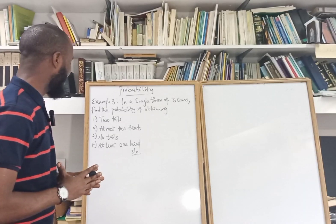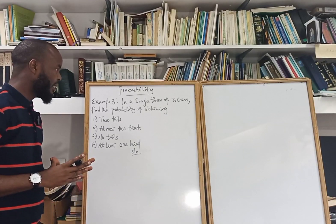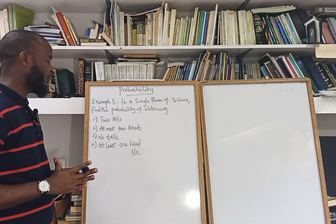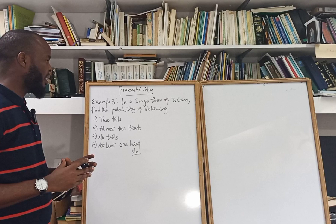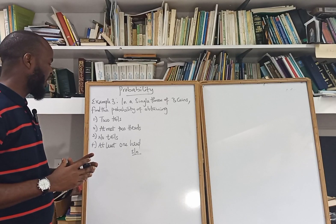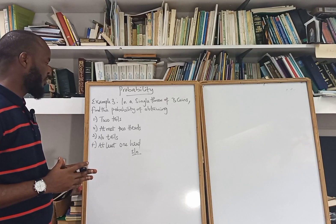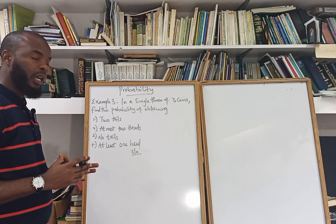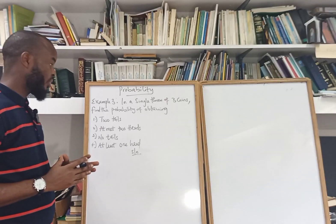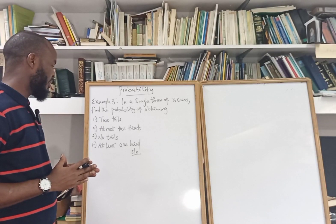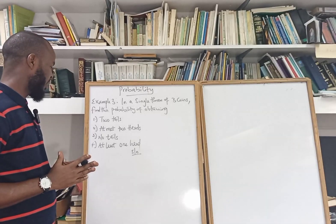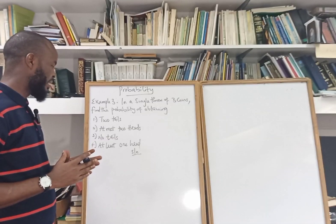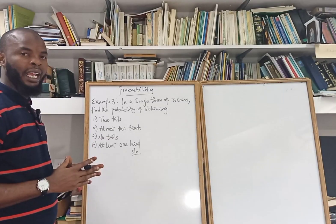Example 3 says that in a single throw of 3 coins, find the probability of obtaining: 2 tails, at most 2 heads, no tail, and at least 1 head.